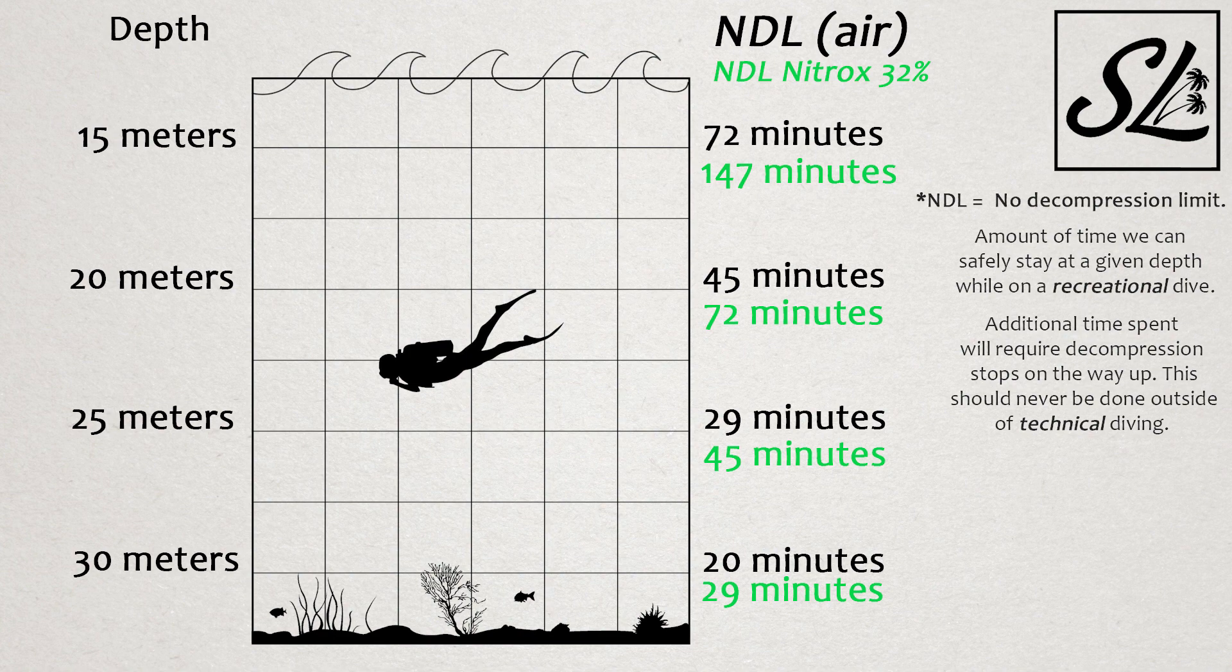With this greater concentration of oxygen comes a then lowered concentration of nitrogen, which will not accumulate in your tissues as quickly, allowing for these extended limits.